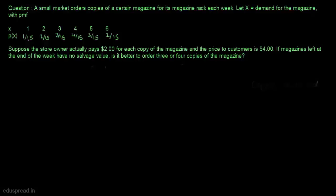In this lecture, I am going to solve this question. A small market orders copies of a certain magazine for its magazine rack each week. Let x be the demand for the magazine with a given probability mass function. Suppose the store owner pays $2 for each copy of the magazine and the price to customers is $4.